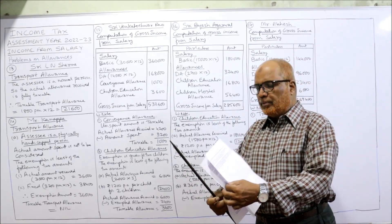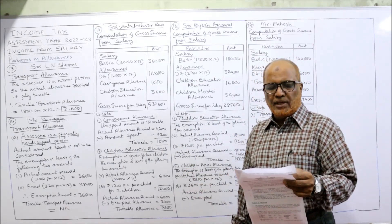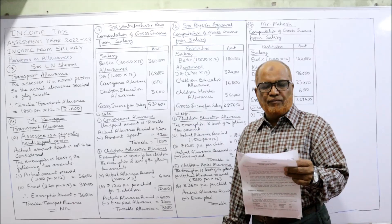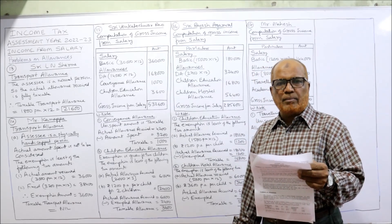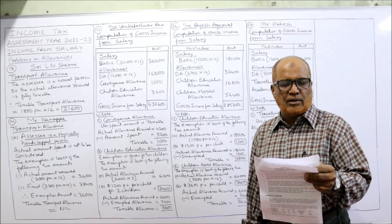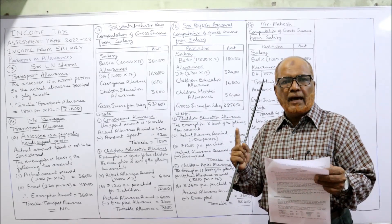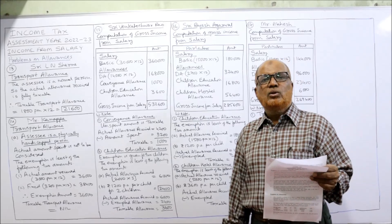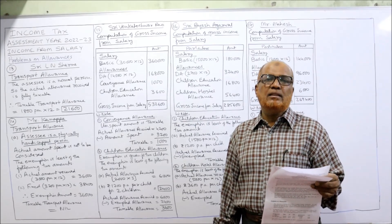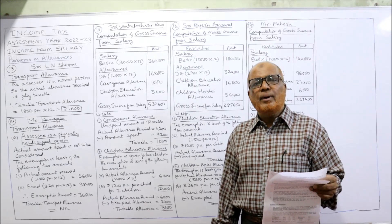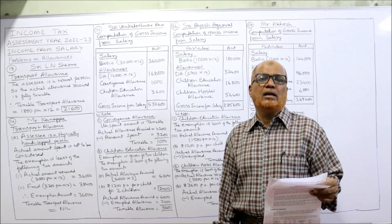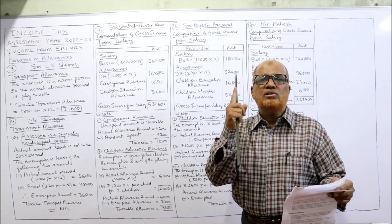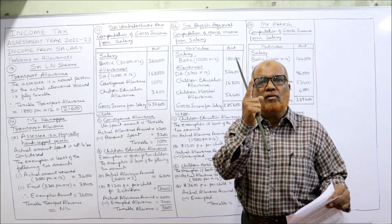16th problem: Sri Rajesh Agarwal is working in a limited company in Surat. Salary particulars: basic pay 15,000 per month, DA 2,700 per month (fully taxable), children education allowance for his daughter only (one child) 1,500 per month, so 1,500 into 12 equals 18,000 per year. Exemption is given for 1,200 per child; since he gets the allowance for only one child, exemption is also for one child — 1,200 rupees is exempted.